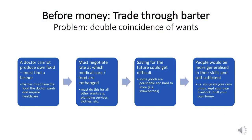First, we need to consider a time before money: trade through barter. And this often created the problem of double coincidence of wants. So we consider a situation where you've got a doctor who cannot produce their own food. They must find a farmer, somebody who specialises in producing food. That farmer must have the food the doctor wants and require healthcare. Once they've done this, the doctor and the farmer must negotiate rates at which medical care and food are exchanged. They must do this for all other wants, for example plumbing services, clothes, etc.